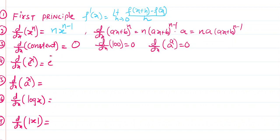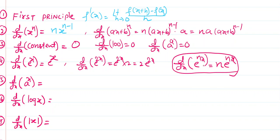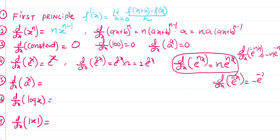d/dx of e^x is equal to e^x. d/dx of e^(2x) is equal to e^(2x) multiplied by the derivative of 2x, which is 2, so it equals 2e^(2x). In general, d/dx of e^(nx) is equal to n·e^(nx). Similarly, d/dx of e^(-nx) is equal to -n·e^(-nx), and d/dx of e^(-x) is equal to -e^(-x).